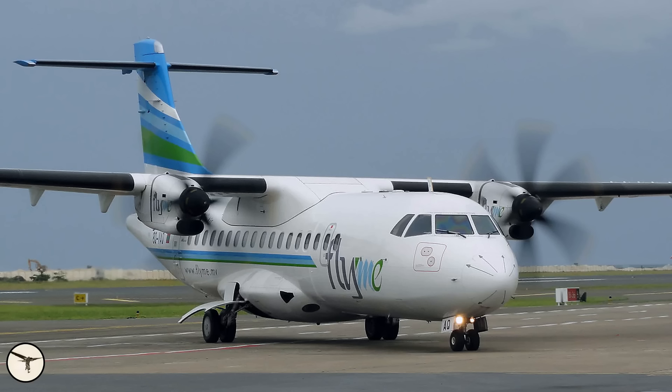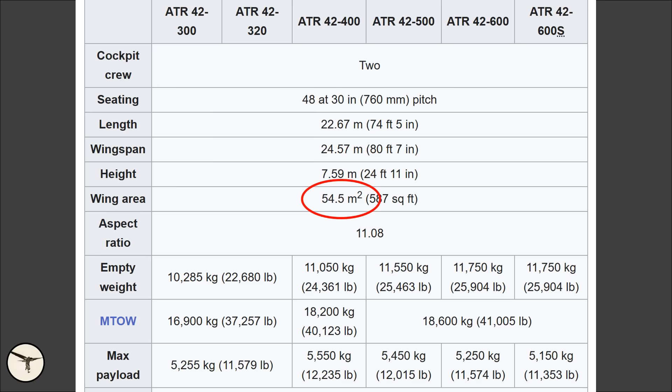In the 50 seat category we have the ATR-42. It has a wing area of 54.5 square meters and a maximum takeoff weight of 18,600 kilos. When we divide the max takeoff weight with the wing area we get 341 kilos per square meter.